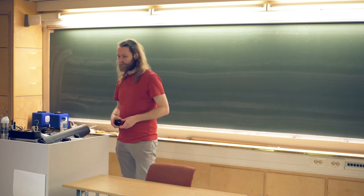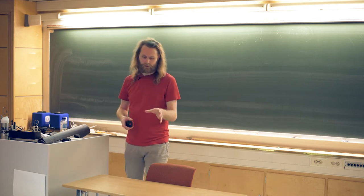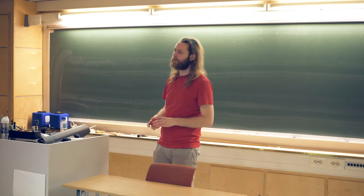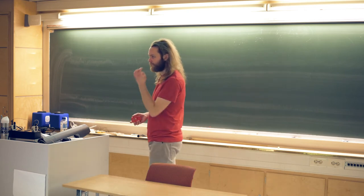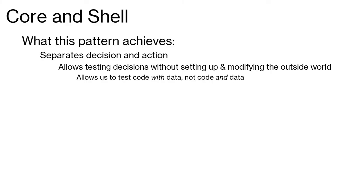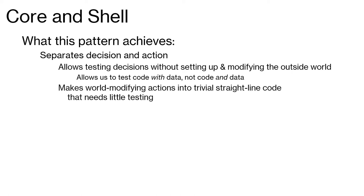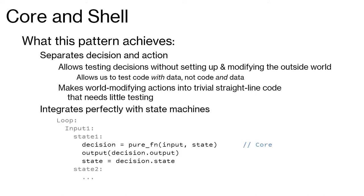The other way of doing things would be to have to set up the code that performs the action and also set up the entire world, having to test both the code and also the data that we're sending in — that's a pain in the ass. This approach also transforms all of these world-modifying actions into trivial straight-line code isolated into a single place. And since it's a straight line, it doesn't really need a lot of testing.